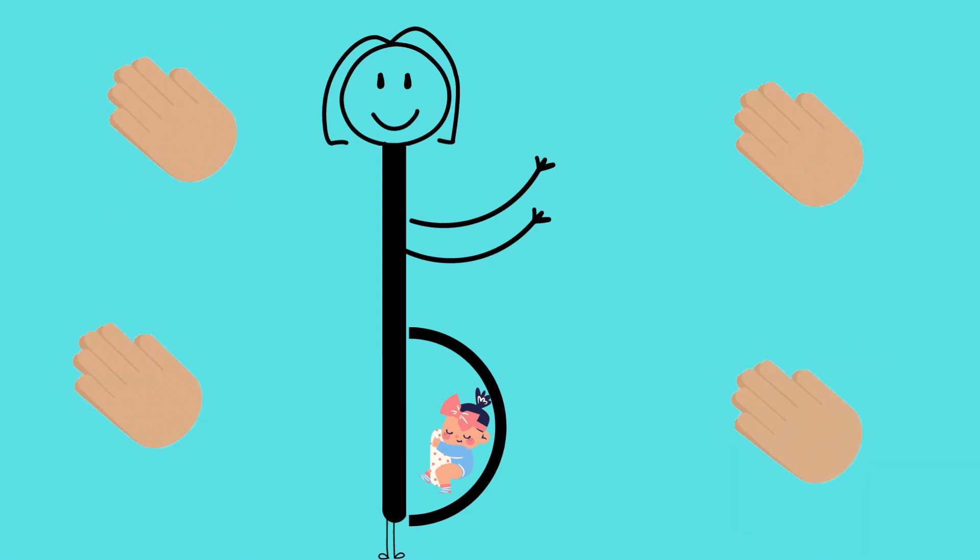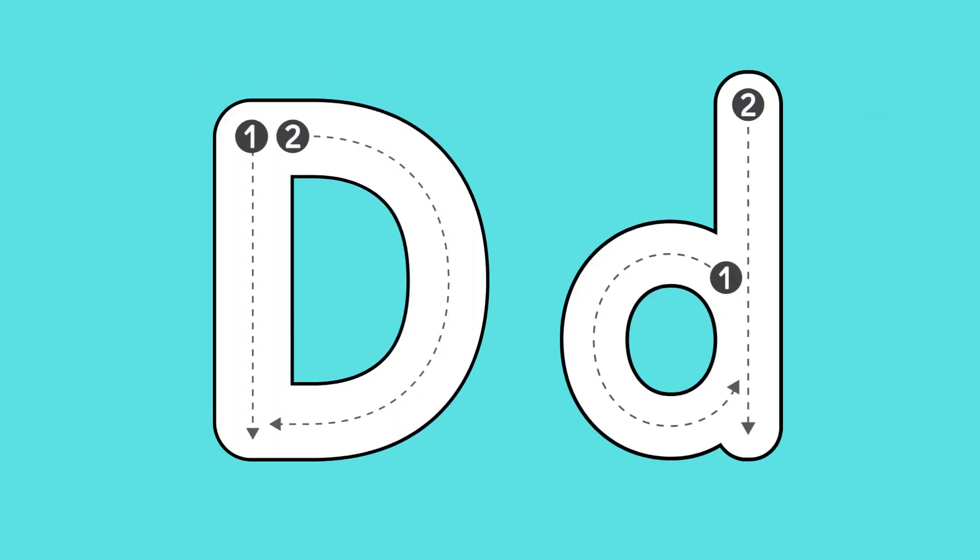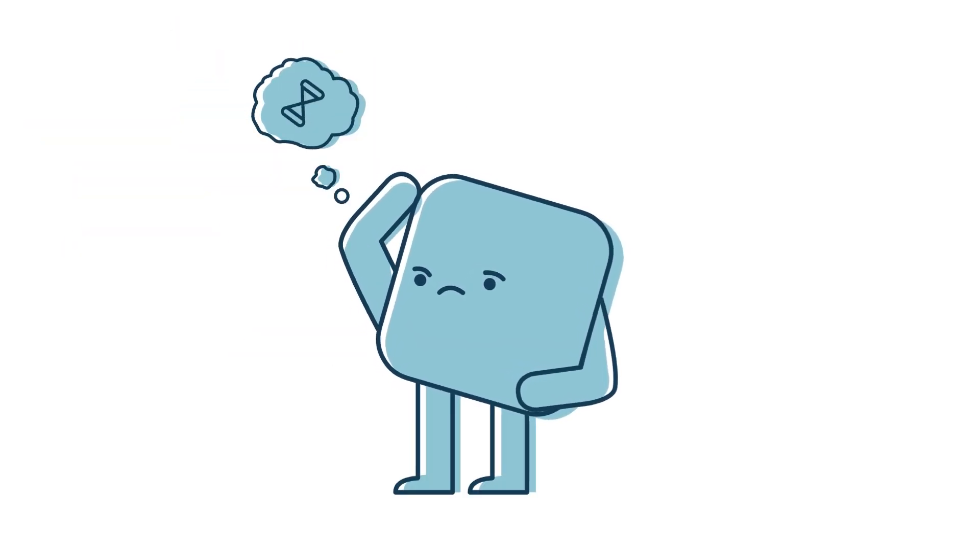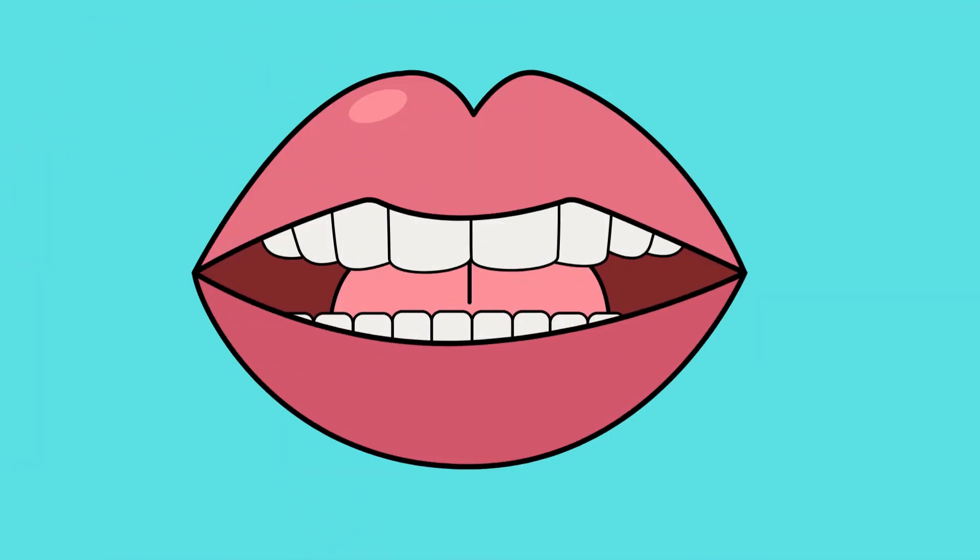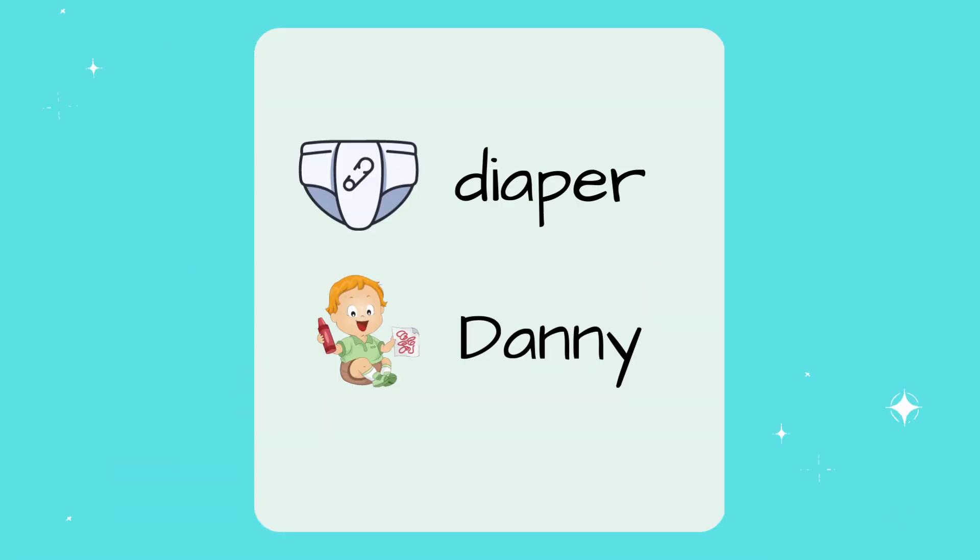Now we are going to focus on the letter D. D says D, D, D. What does your mouth do when you say D for D? Yes, the tip of your tongue goes behind your teeth and says D, D, like in diaper and Danny.